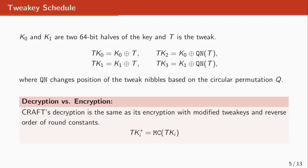All together, this structure of CRAFT makes it possible for decryption to be the same as encryption, up to a modification on the tweak keys and the round constants. It just needs to reverse the order of round constants and also modify the tweak keys with the equation shown here.